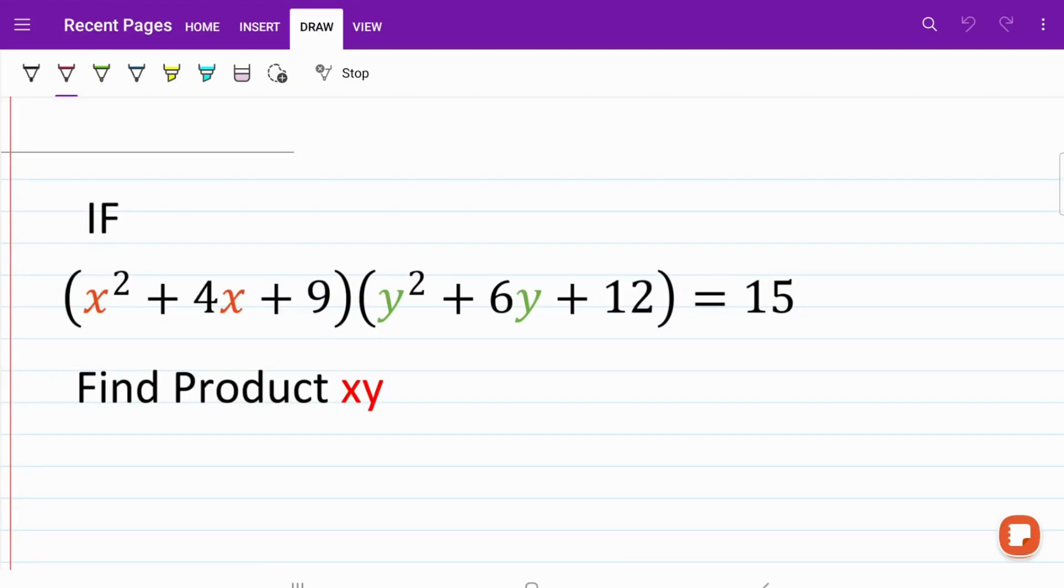In the following equation, we are given two quadratic functions. The first being x squared plus 4x plus 9, and the second is y squared plus 6y plus 12. When you multiply these two functions together, they are equal to 15. And we are told to find the product of x multiplied by y.